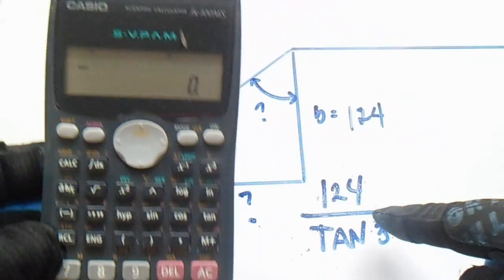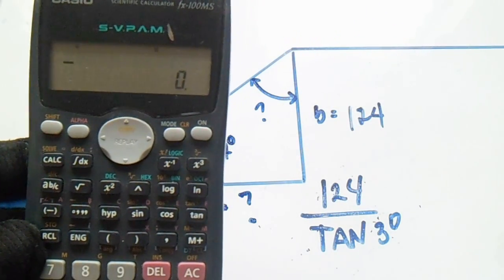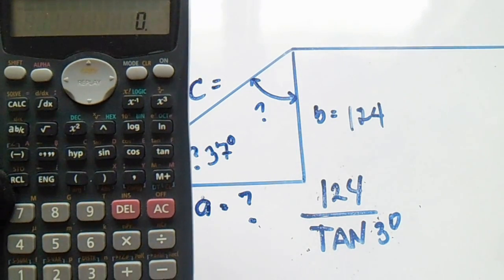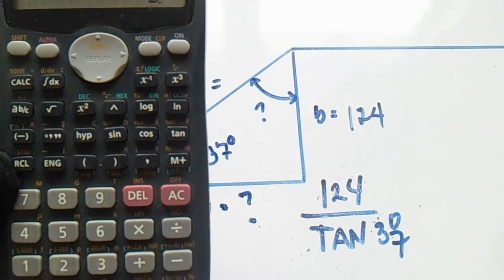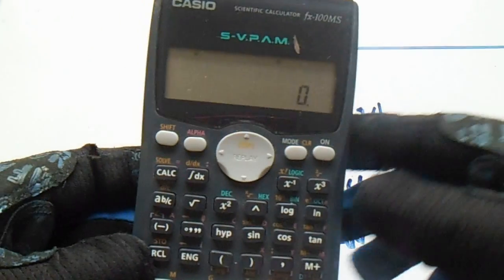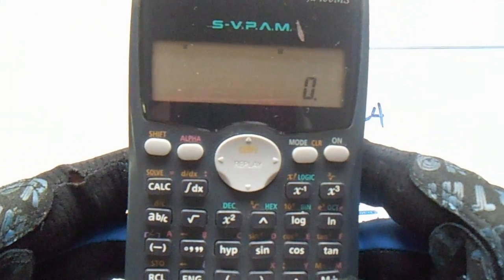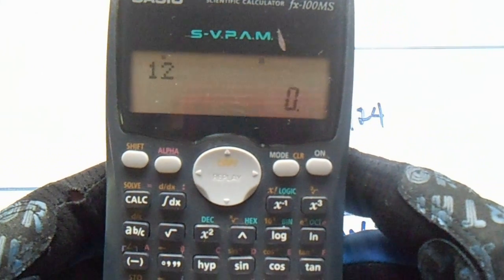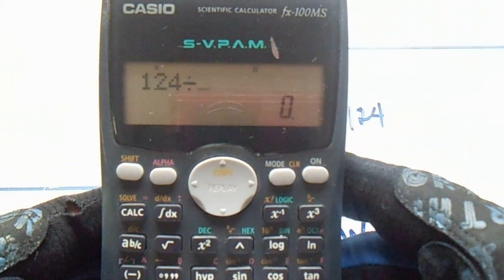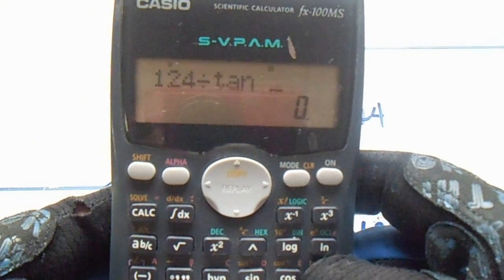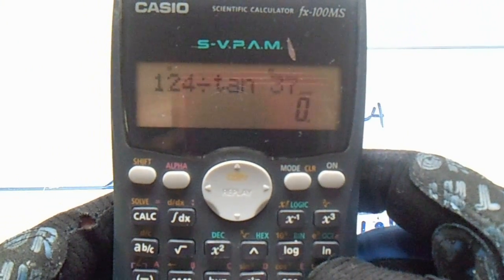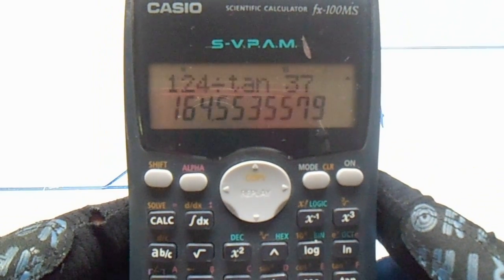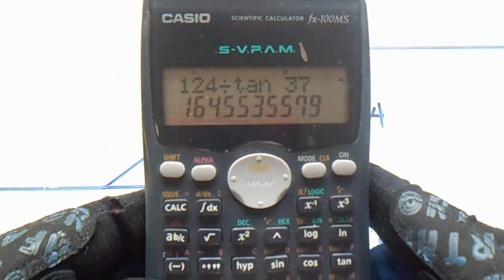So 124 divided by tan, tan 37 degrees. Okay, so 124 divided by tangent 37 equals.